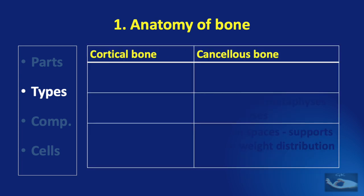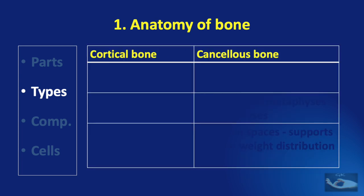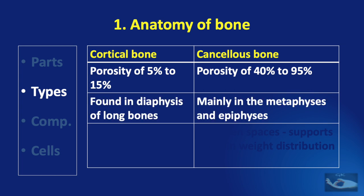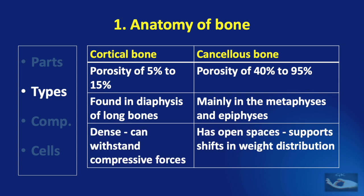Comparing cortical and cancellous bone: cortical bone has a porosity of 5% to 15%, while cancellous bone is 40 to 95% porous. Cortical bone is found in the diaphysis of long bones and also as a thin layer around the trabecular bone. Cancellous bone is found mainly in the metaphysis and epiphysis. The cortical bone, being dense, can withstand compressive forces. Cancellous bone, on the other hand, has open spaces and supports shifts in weight distribution.